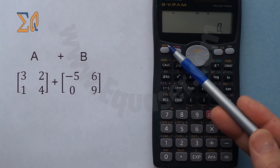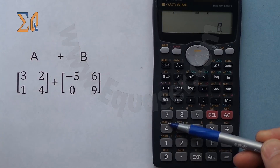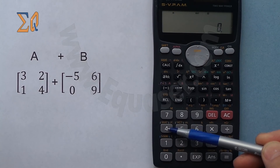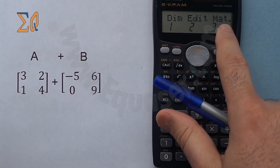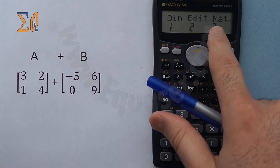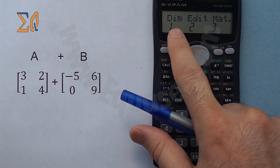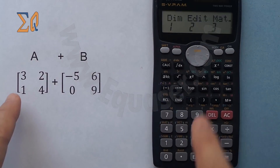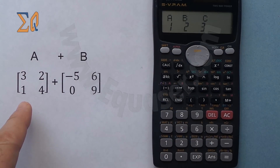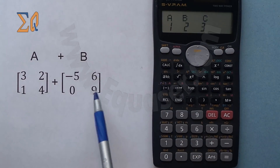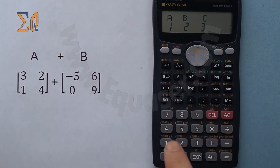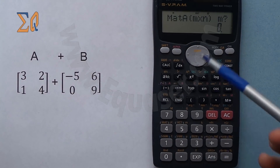To work with matrices, press Shift and then MAT, which is button number four. Here we can go into edit mode or dimension mode. Let's go to dimension. It asks which matrix you want to work with — we are going to store our first matrix in matrix A, so I press one.